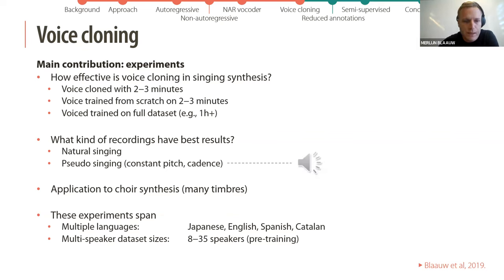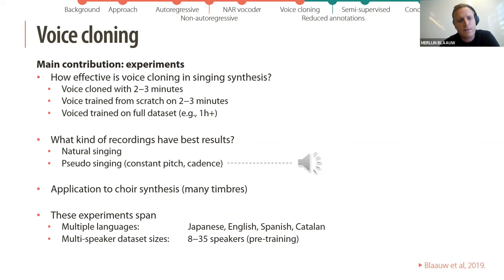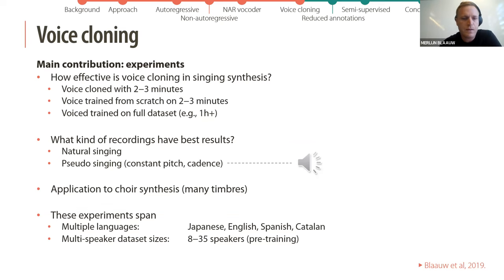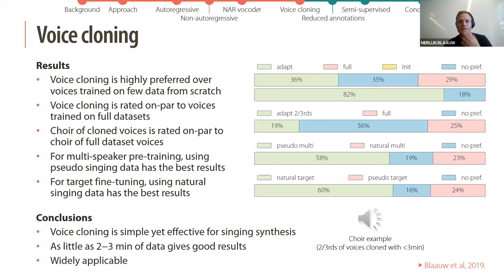We also investigated the application to choir synthesis, which requires many different timbres. These experiments span multiple languages including Japanese, English, Spanish, and Catalan, and multiple multi-speaker dataset sizes ranging from 8 to 35 speakers for the pre-training step.